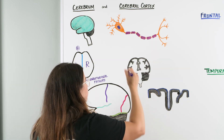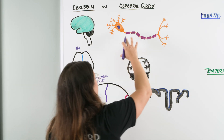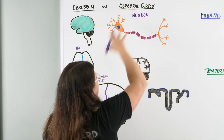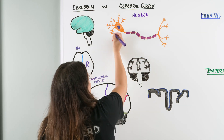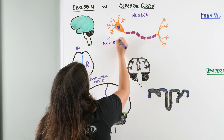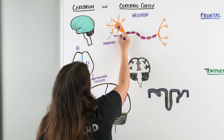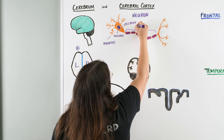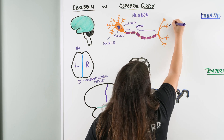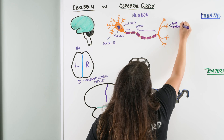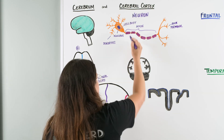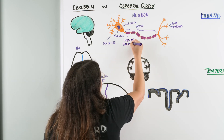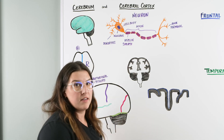Well why is it gray matter? In our nervous system we have neurons. In our neuron, let's identify some structures really quick. We have our dendrites, our nucleus, our cell body, our axon, and our axon terminals. We also have these areas which are our myelin sheaths, and they play an important role in sending signaling.